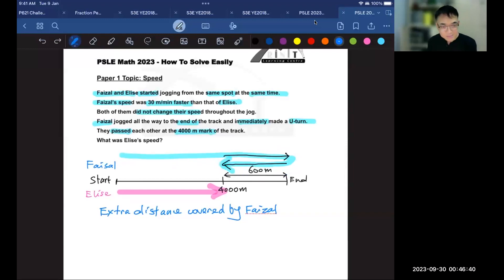How much is that? If your answer was 600 times 2, then you are perfectly right. Now, how was Faisal able to cover an extra 1,200 meters? Because every minute he covers 30 meters more. So what should we do next?